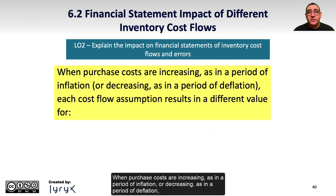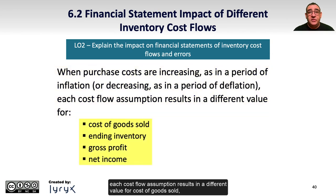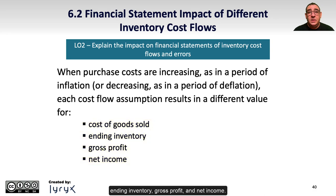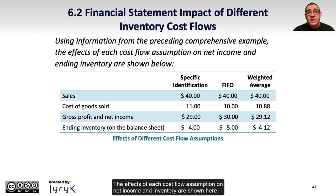When purchase costs are increasing, as in a period of inflation, or decreasing, as in a period of deflation, each cost flow assumption results in a different value for cost of goods sold, ending inventory, gross profit, and net income. Using information from the preceding comprehensive example in Learning Objective 1, the effects of each cost flow assumption on net income and inventory are shown here.